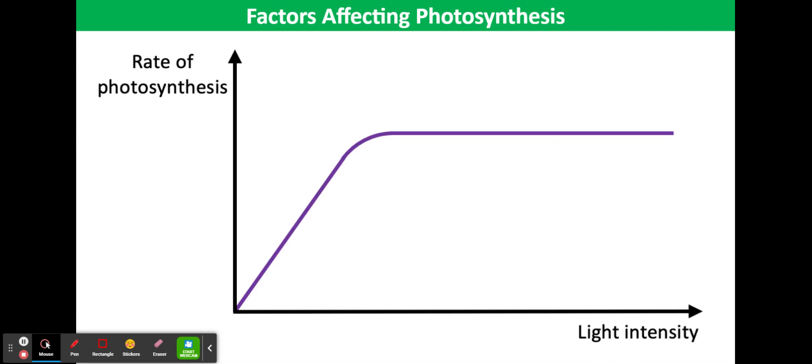First of all, we're going to look at the relationship between the rate of photosynthesis and light intensity. Light provides the energy to power the first stage of photosynthesis and produce ATP and reduced NADP needed for the next stage.